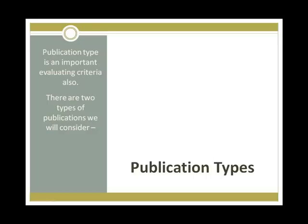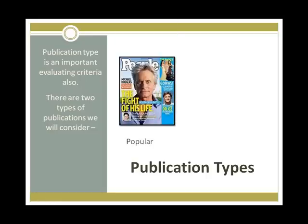Publication types: Another way to evaluate periodical sources is by publication type. The two types of publications we will consider are popular and peer-reviewed, sometimes called refereed or scholarly. Popular magazines are geared toward the general public and are more for pleasure reading. They usually have short articles with no footnotes or bibliography. Some examples are Time Magazine, Car and Driver, People, and the Paducah Sun newspaper.